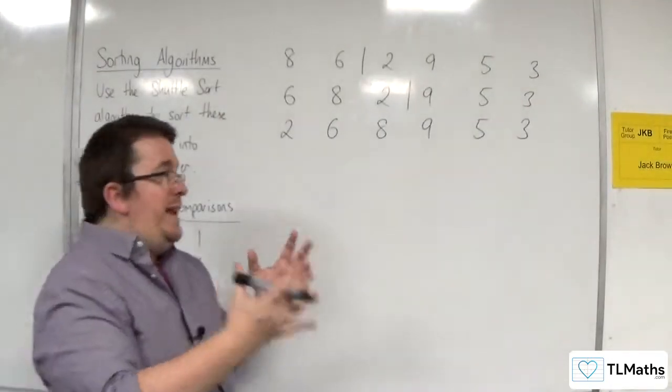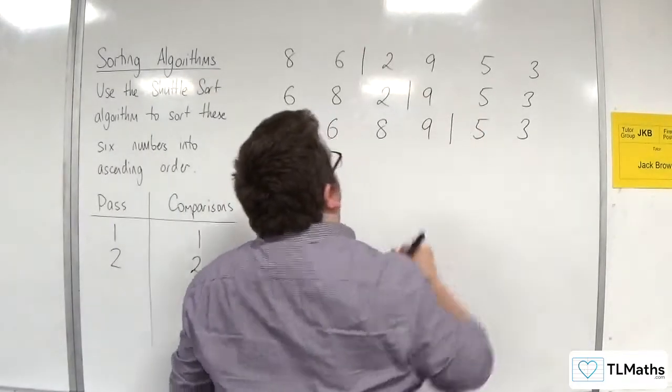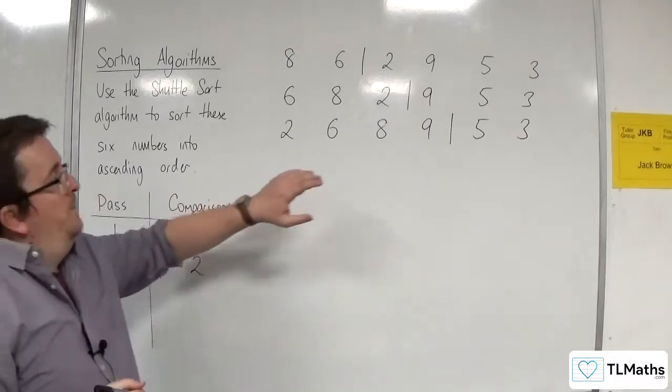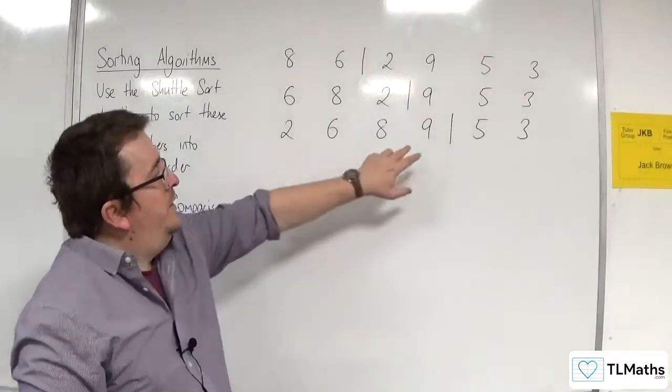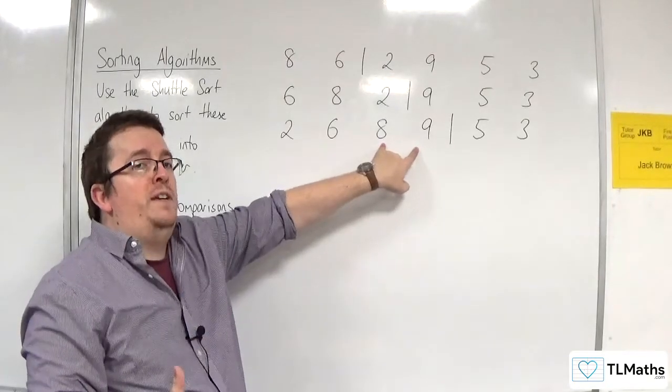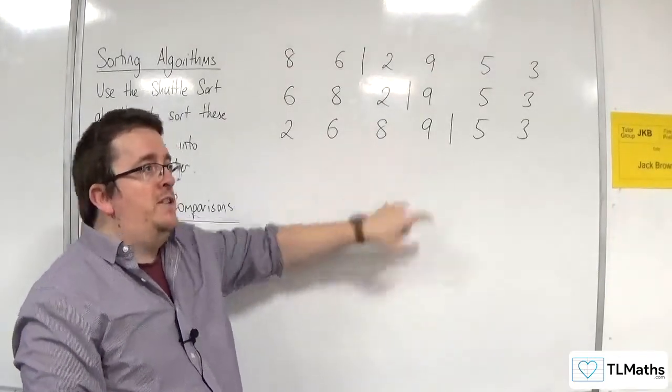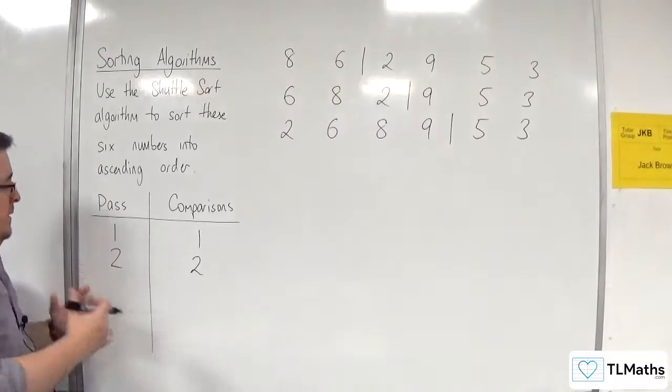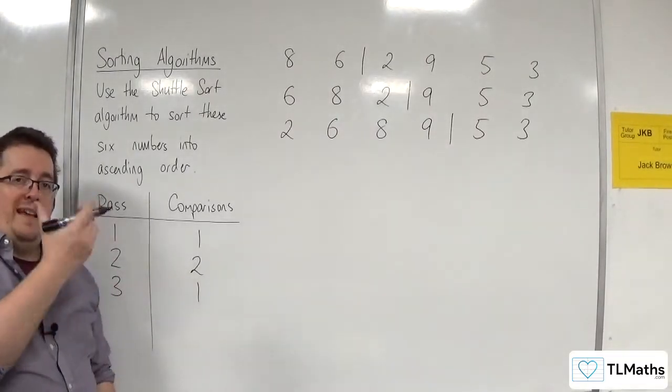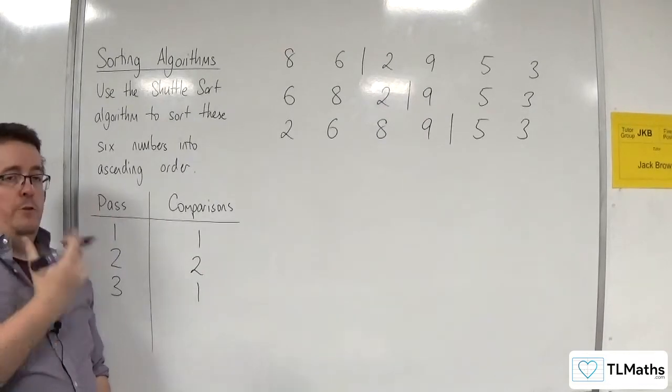We now bring in nine, the next number into the list. With nine, nine needs to be compared with eight, but they're already in the correct order. So I don't need to do anything now. In the third pass, we make one comparison. Nine gets compared with eight, but no swap occurs.